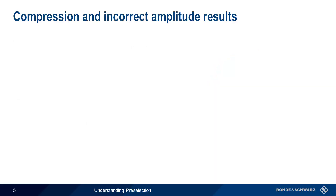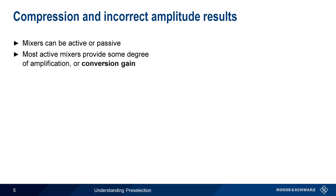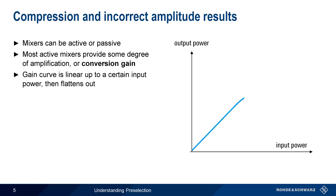There are basically two general categories of mixers: active and passive. As the names imply, active mixers are made from active components like transistors, and passive mixers are made from passive components like diodes. Although passive mixers usually introduce some loss, active mixers typically provide some amplification, something known as conversion gain. Mixers therefore are liable to the same compression effects typically seen in amplifiers. Gain increases linearly with increasing input power, but at some point the gain curve flattens out, and conversion gain is no longer linear.